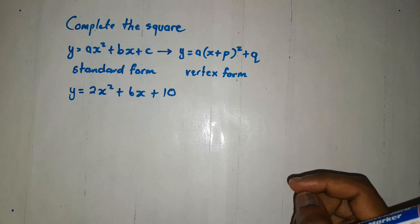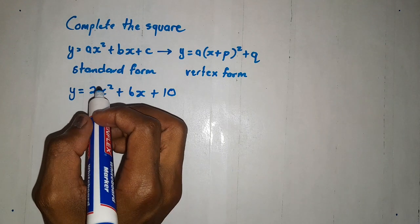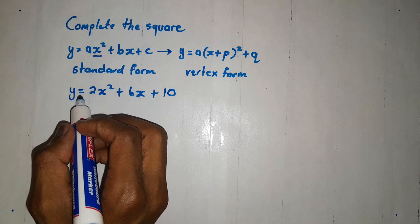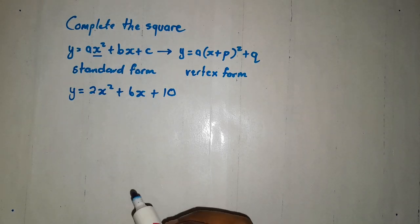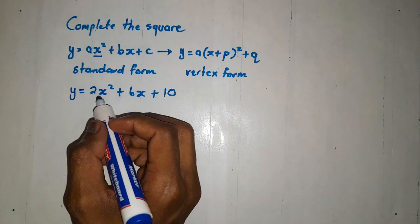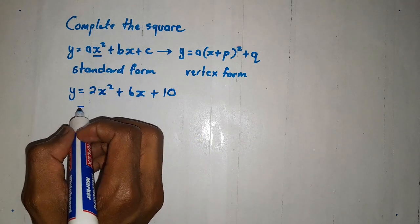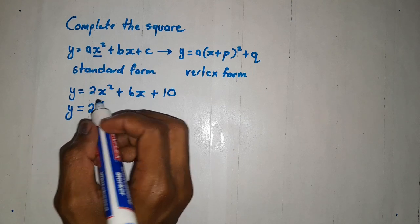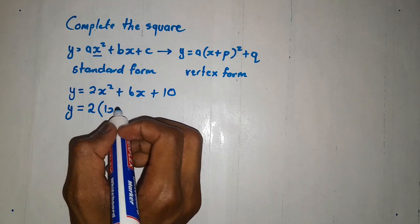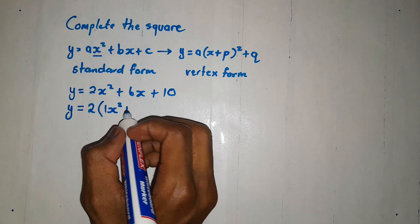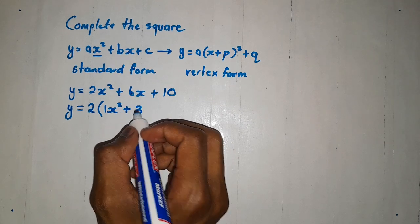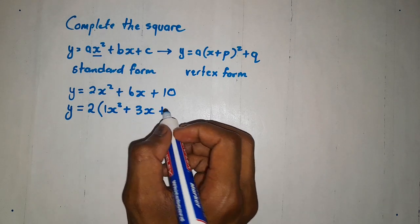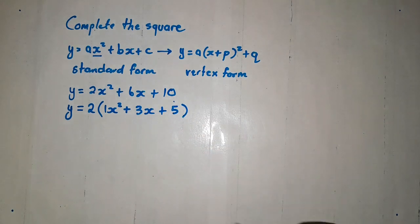Firstly, you must know that when completing the square, the coefficient of x squared, which is a in this case, or which is 2 in this case, we must make sure that it's 1. Then, in order for us to make the coefficient of x squared to be 1, we have to factor out these two. Then, we are going to get, when we take out 2, we are going to get 1x squared plus this one, 3, in order to get 6, we need 3x. In order to get 10, we must put 5.